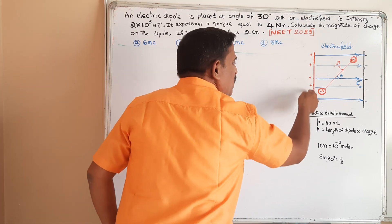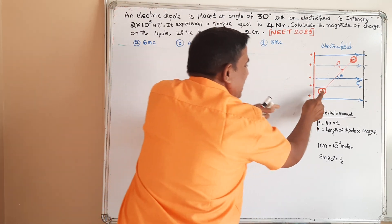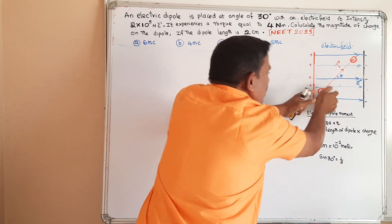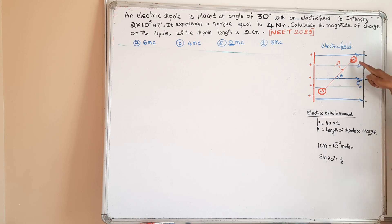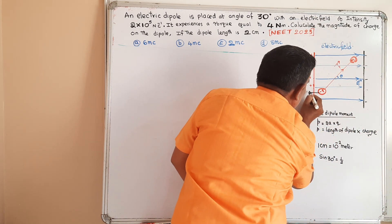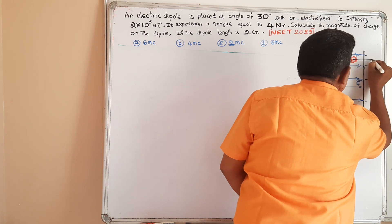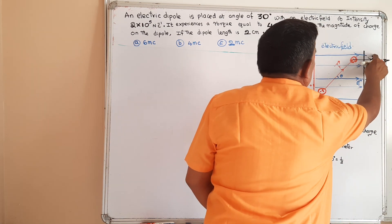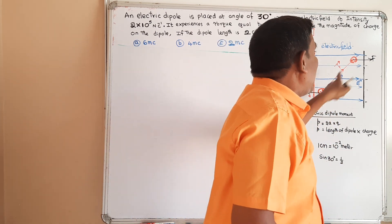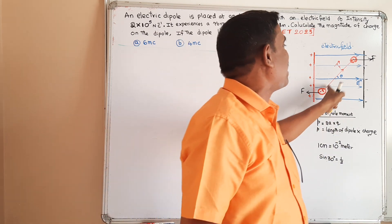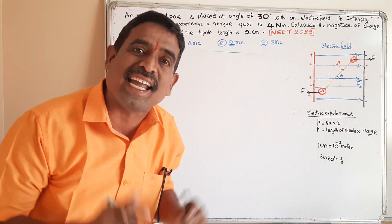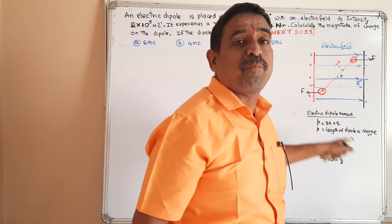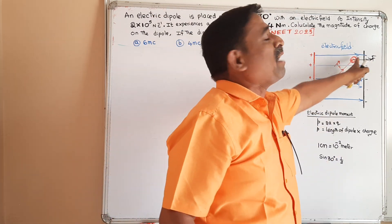The positively charged plate attracts the negatively charged particle with some force, and the negatively charged plate attracts the positively charged particle with some force. So two equal and opposite forces are acting on this electric dipole. Then the dipole is turned — this turning effect is called torque.